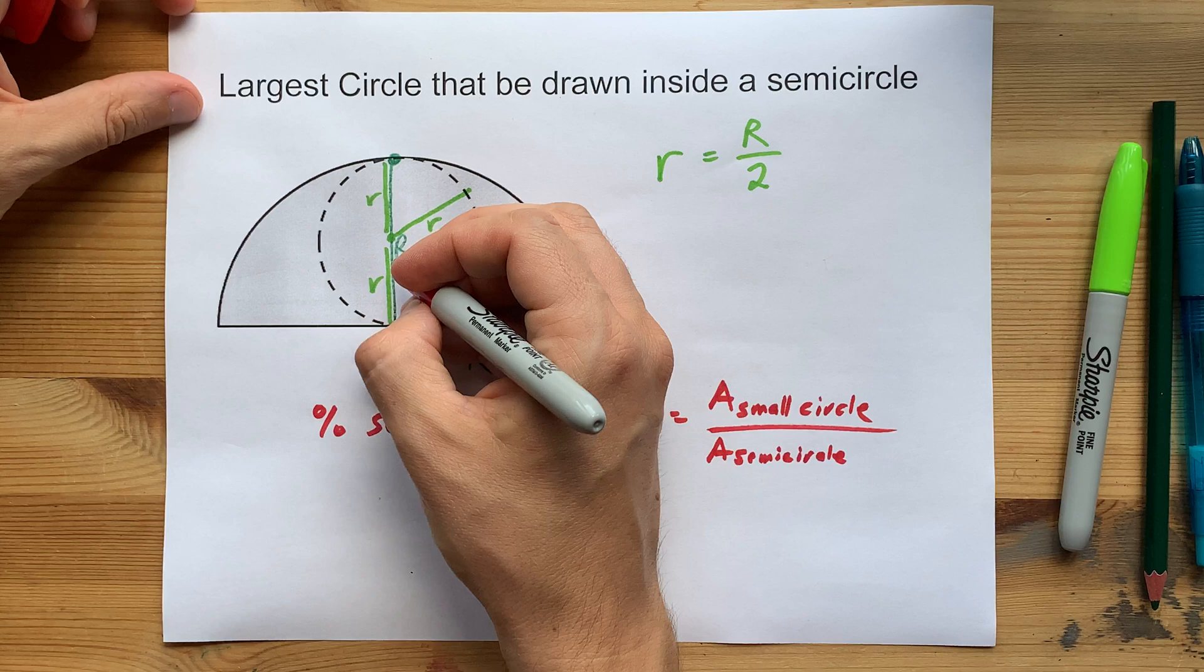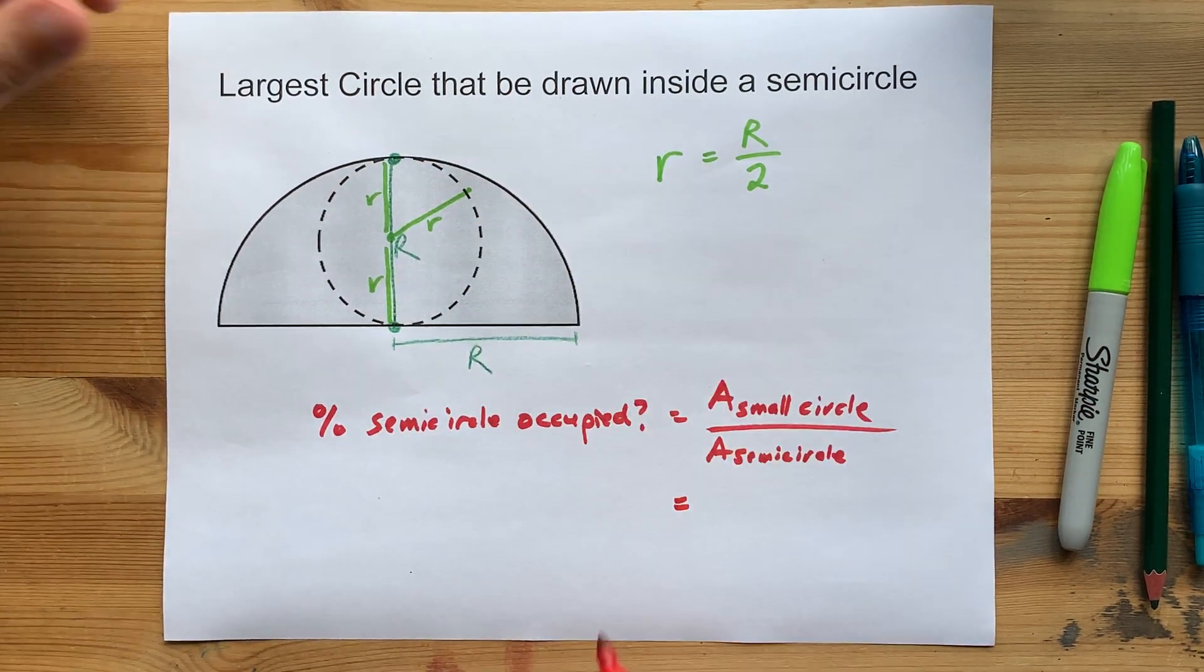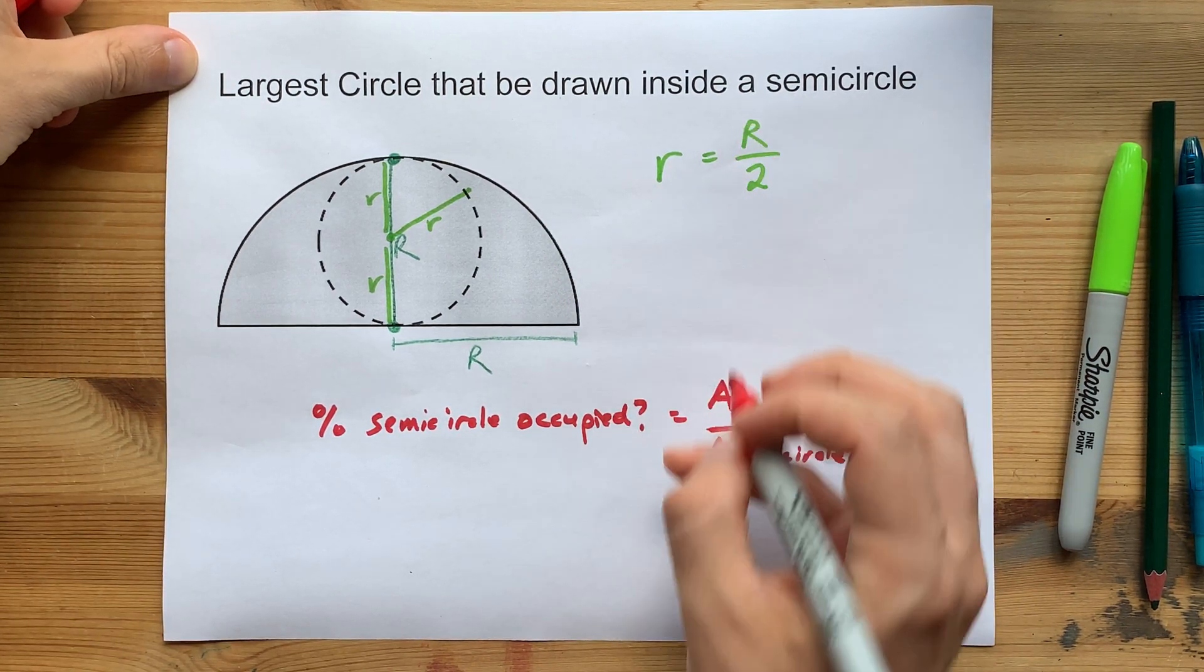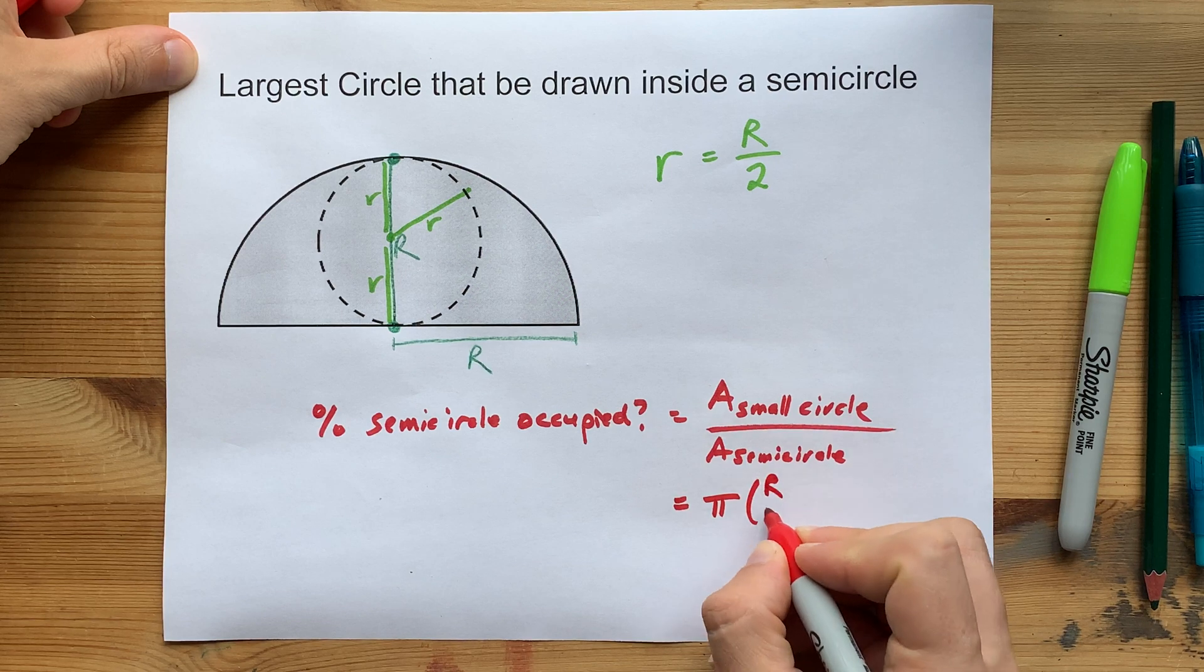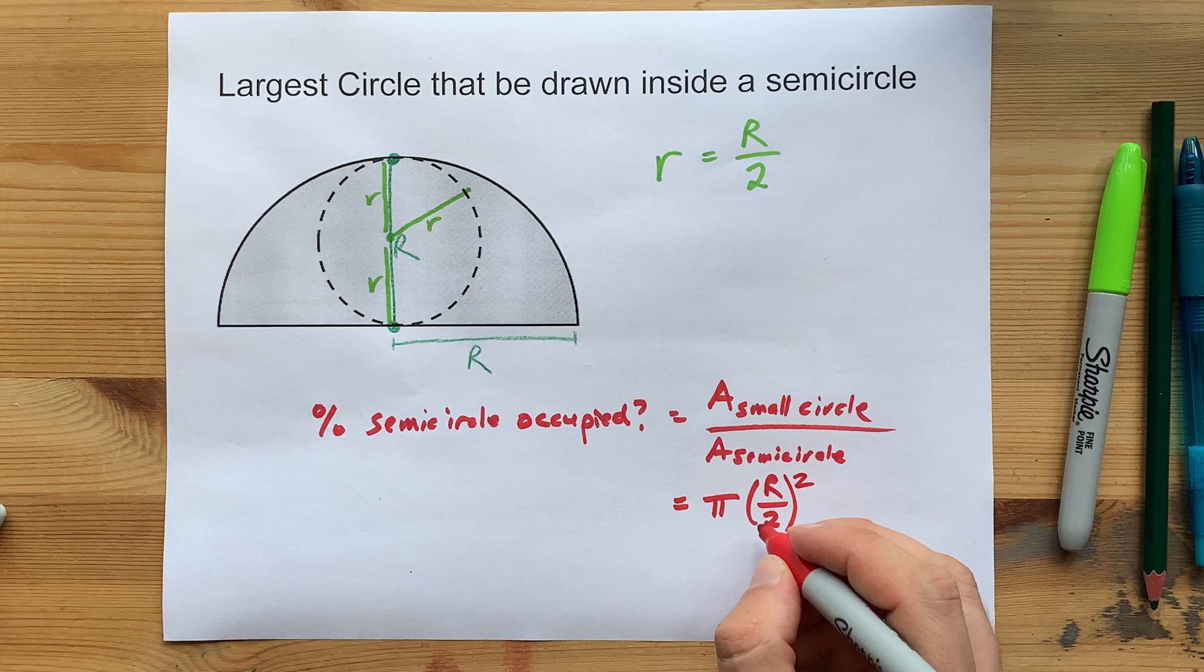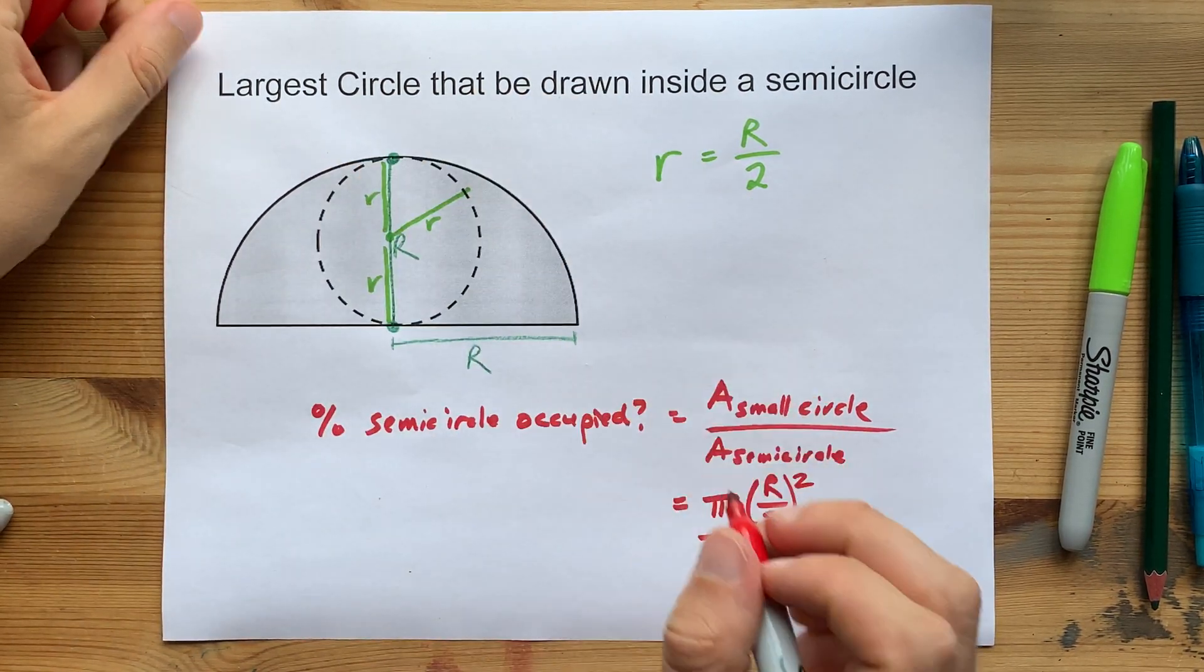The area of the whole circle here is π(r)². And because we know that little r is half of big R, we can replace r with R/2. So this is π(R/2)² divided by the area of the semicircle.